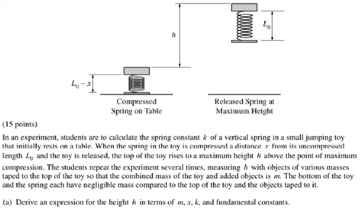So the question says: in an experiment students are to calculate the spring constant k of a vertical spring in a small jumping toy that initially rests on a table. When the spring in the toy is compressed a distance x from its uncompressed length l₀, so when it's relaxed it would be l₀ length, and the toy is released, the top of the toy rises to a maximum height h above the point of maximum compression.